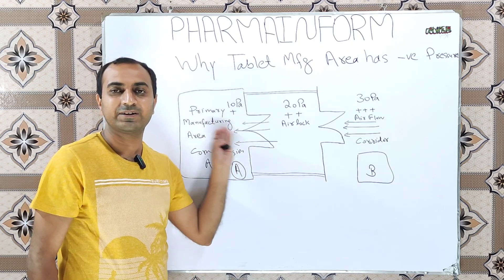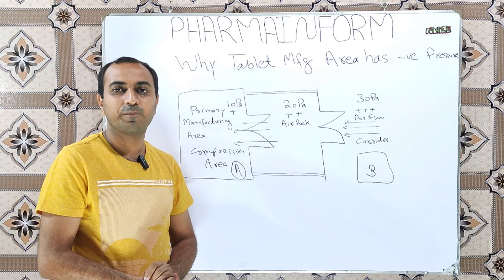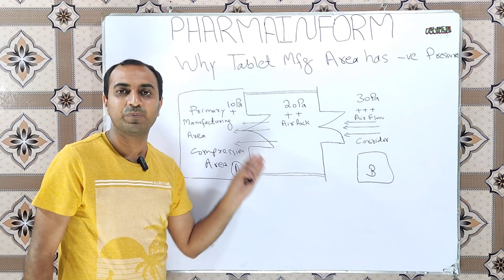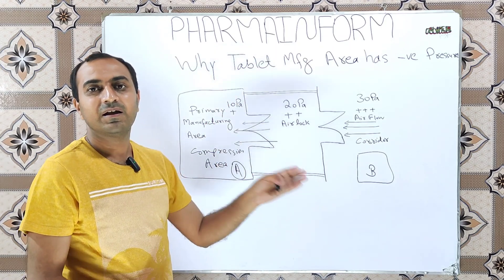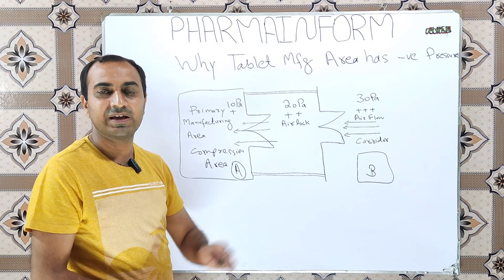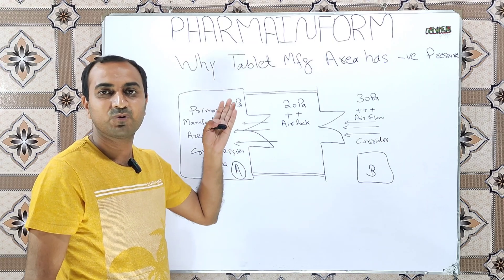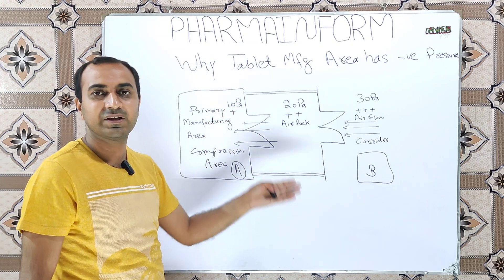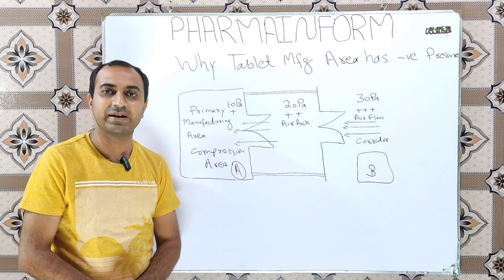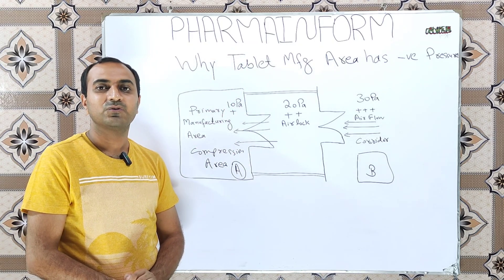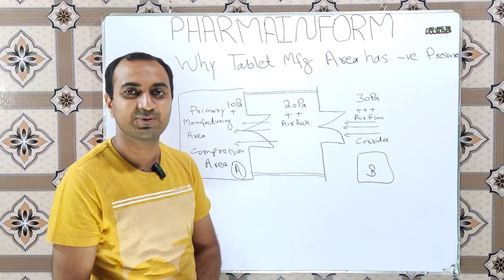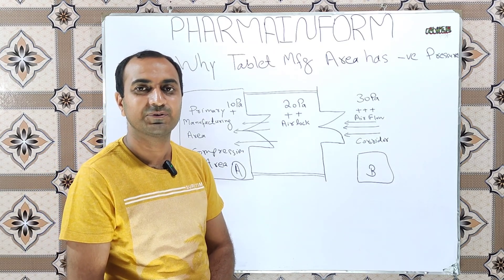So I hope now you are familiar with the concept of why the tablet manufacturing area is kept at negative or low pressure. This concept is implemented for all tablet manufacturing stages: the granulation area, the compression area, the coating area, and the blending areas. If you like the video, share it with others, and till the next video, Allah Hafiz.